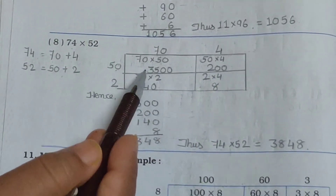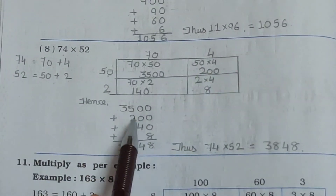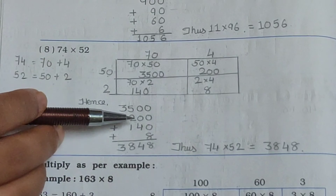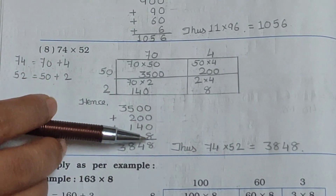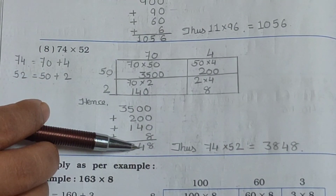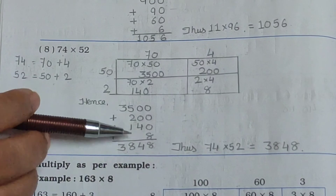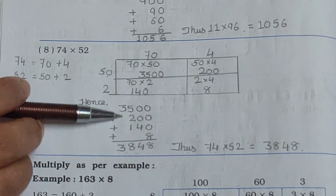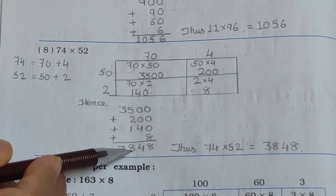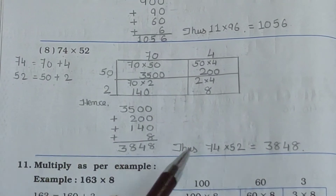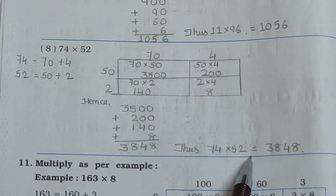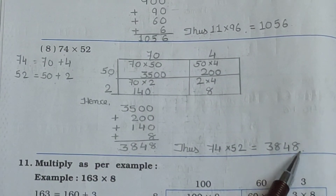Hence 3500 plus 200 plus 140 plus 8. Now do the addition: 0 plus 0 plus 0 plus 8 is 8. 0 plus 0 plus 4 is 4. 5 plus 2 plus 1 is 8. And 3 just the same — 3. Answer is 3848. Thus 74 multiplied by 52 is equal to 3848.